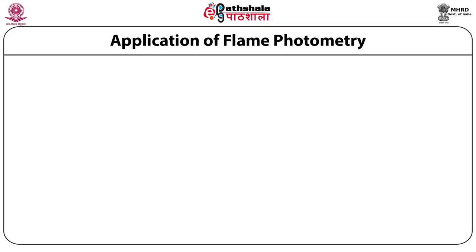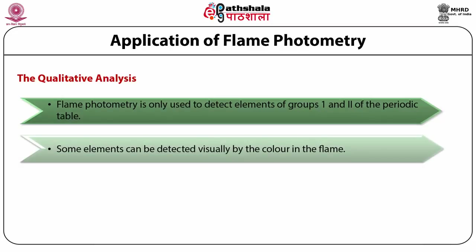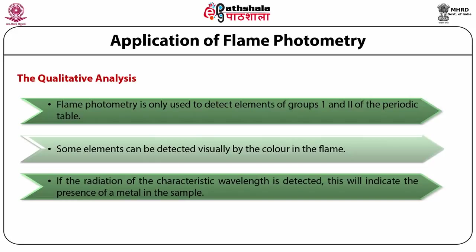Applications of flame photometry — qualitative analysis: flame photometry is used to detect elements of groups 1 and 2 of the periodic table, including sodium, potassium, lithium, magnesium, calcium, strontium, and barium. Some elements can be detected visually by the color in the flame — for example, sodium produces yellow lines — but this is not very reliable. The best method is to use a flame photometer with a filter or monochromator to separate radiation of the characteristic wavelength of the element. If radiation of the characteristic wavelength is detected, it indicates the presence of that metal in the sample.